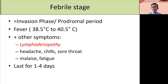This is then followed by the febrile stage, or invasion phase, or prodromal period. During this stage, the patient will present with fever — typically high-grade fever, 38.5 to 40.5 degrees Celsius — associated with lymphadenopathy, which can be localized or generalized. Apart from that, the patient can have headache, chills, sore throat, and malaise or fatigue. This febrile stage will usually last for one to four days.